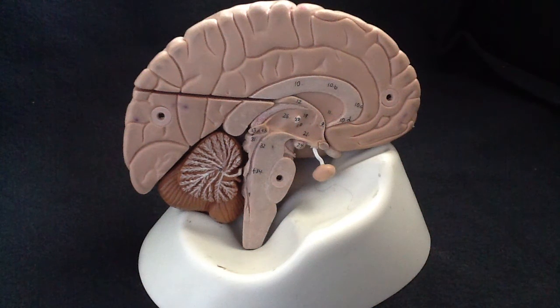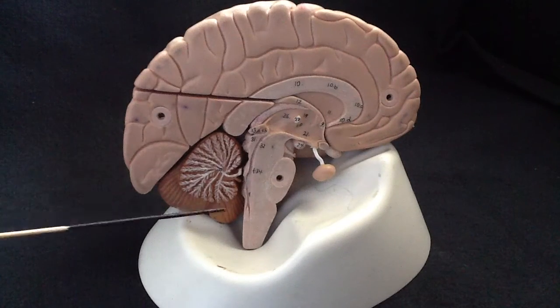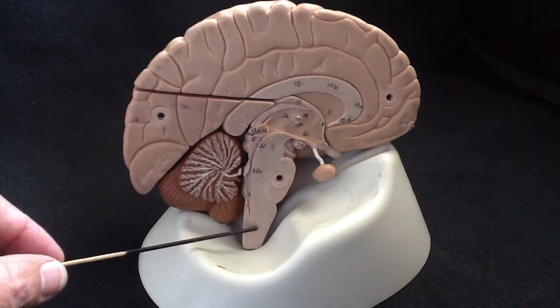The diencephalon is the most difficult of the four regions to study. The cerebrum is always very obvious, the cerebellum is obvious, and the brainstem is obvious.